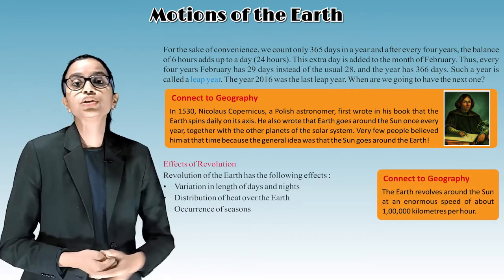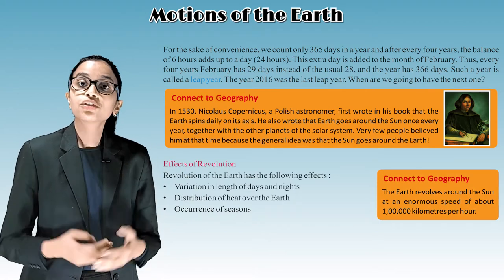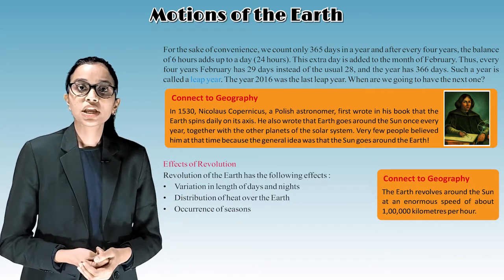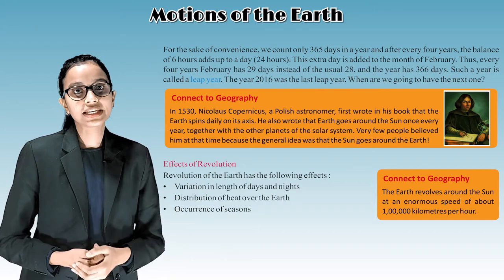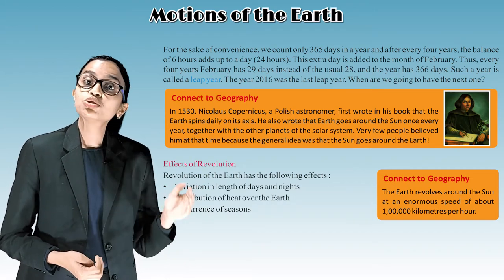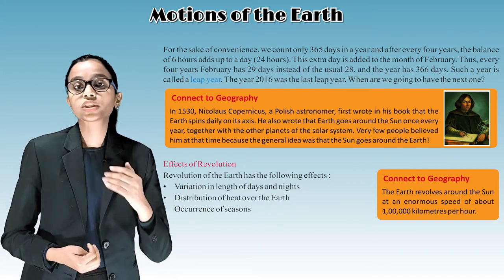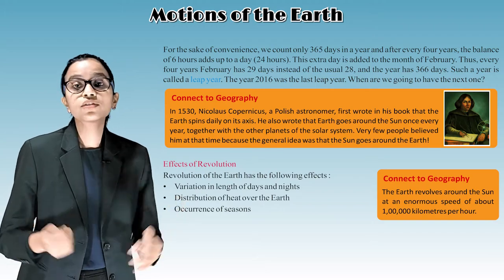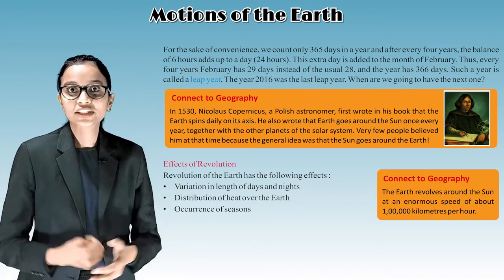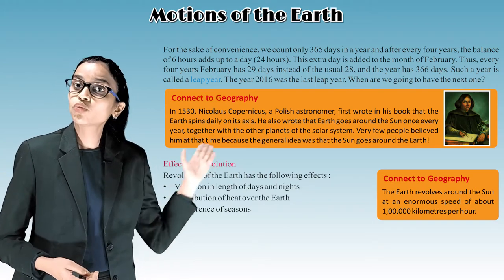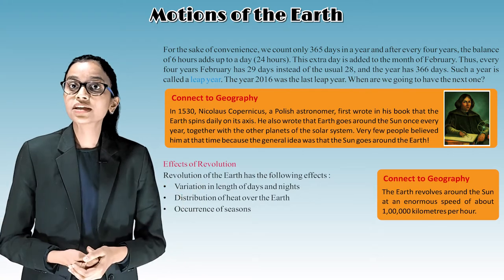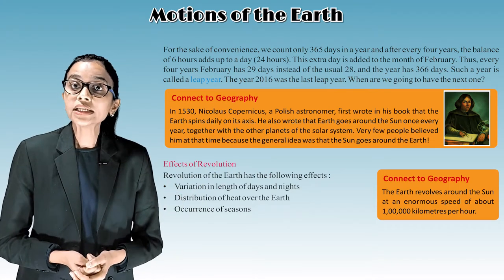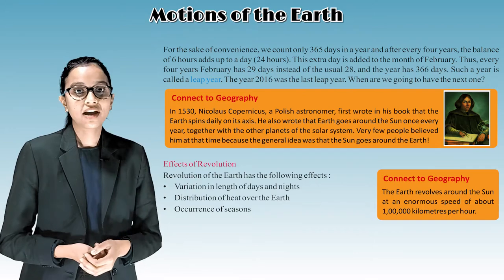Effects of revolution: Revolution of the earth has the following effects — variation in length of days and nights, distribution of heat over the earth, and occurrence of seasons. The earth revolves around the sun at an enormous speed of about 1 lakh kilometers per hour.